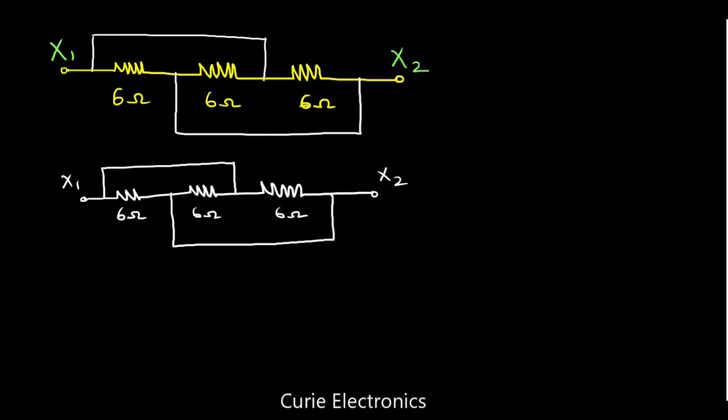Now, what is there? This X1. See, this is X1. So, this point also is X1. And this point is X2. Similarly, this also X2.